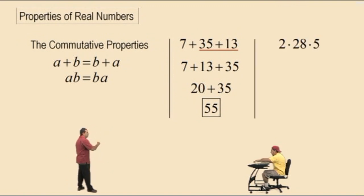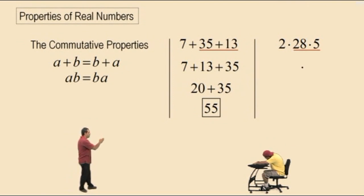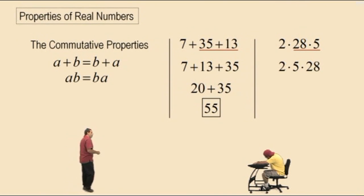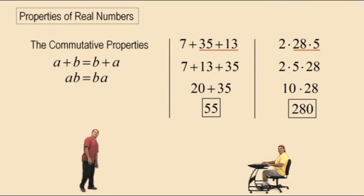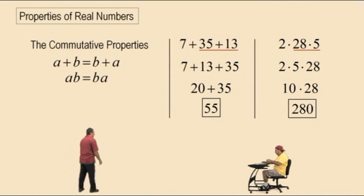Now let's do a multiplication problem: 2 times 28 times 5. Can we multiply the 2 times the 5 first? We can if we apply the commutative property for multiplication. Switch the order on 28 times 5 to 5 times 28, bring down our 2, and work left to right: 2 times 5 is 10, and 10 times 28 is 280.